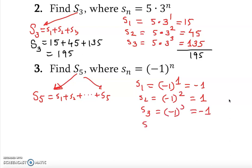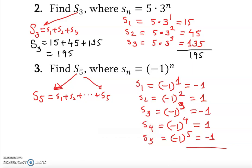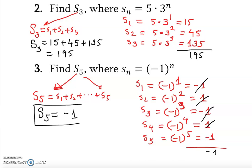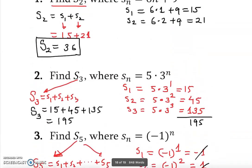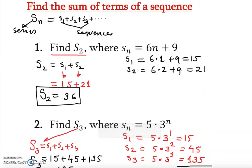s₄ = (−1)⁴ = 1, and s₅ = (−1)⁵ = −1. Adding them up: the pairs cancel, and the answer is S₅ = −1. That's how you find the series — it is basically the sum of the sequence terms requested. Thank you very much, I hope you understand.